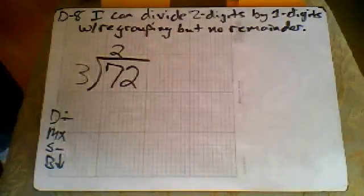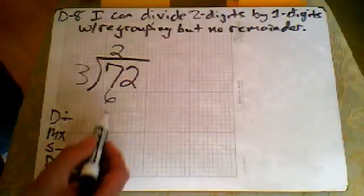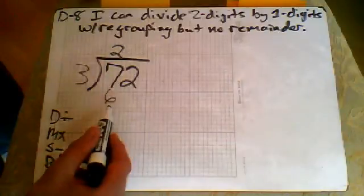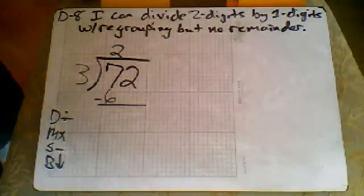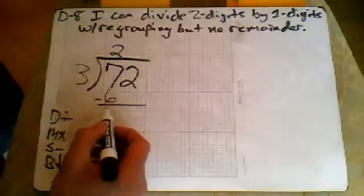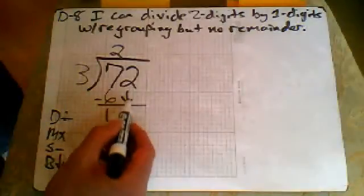And then I'm going to say two times three is six. There's my multiplication step. It's six. I'm going to put it right underneath that seven. I'm going to subtract at this point. Six from seven is one.